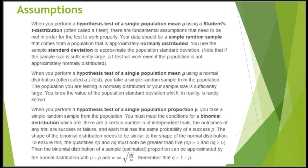When you perform a hypothesis test of a single population proportion p, you take a simple random sample from the population. You need to meet the conditions for a binomial distribution: there are n independent trials, the outcome of any trial is a success or a failure, and each trial has the same probability of success p. The shape of the binomial distribution must be similar to a normal distribution, so np and nq must both be greater than 5.